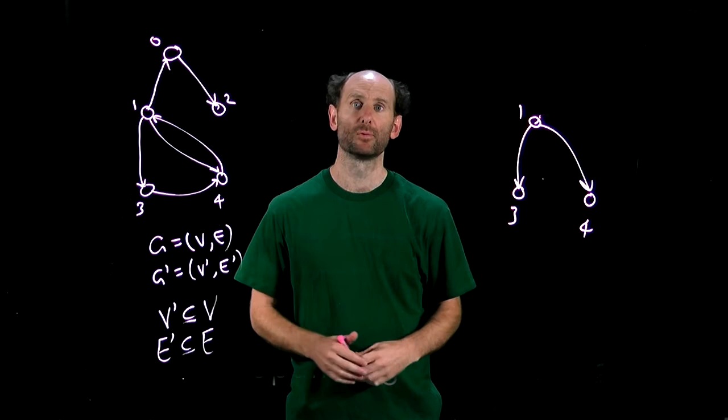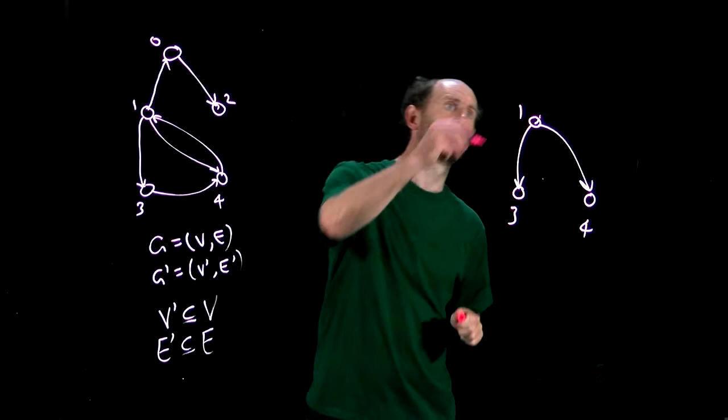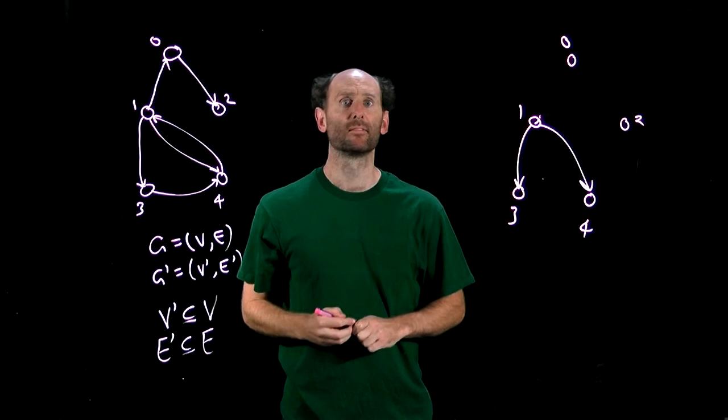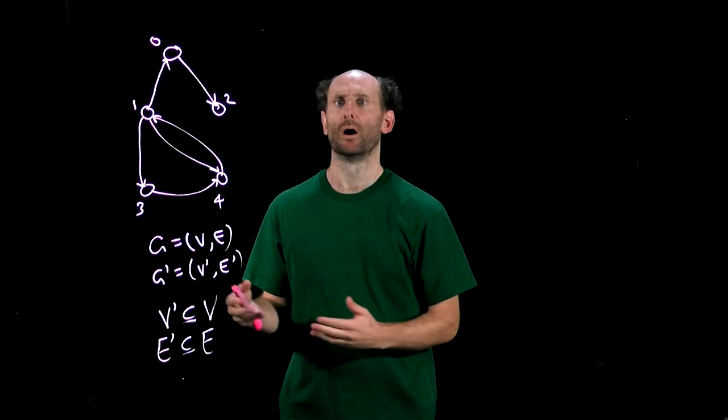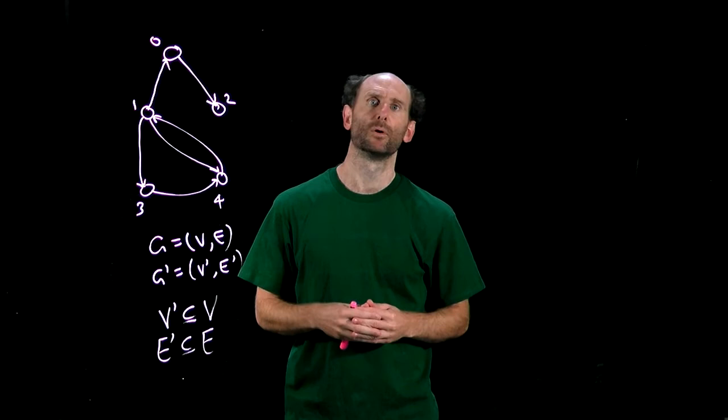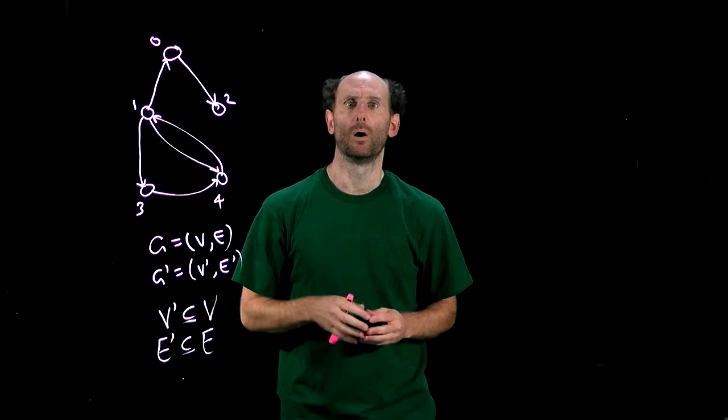In the special case that V' includes all nodes of G, so if we also included 0 and 2, the sub-digraph is called spanning. Another special type of sub-digraph is the induced sub-digraph. Here we take a set of nodes of the original digraph, and the new sub-digraph includes all those nodes and arcs from G between those nodes. For example, the sub-digraph induced by {1, 3, 4} of this graph would look simply like this - it would include all edges that exist between the chosen nodes in G.